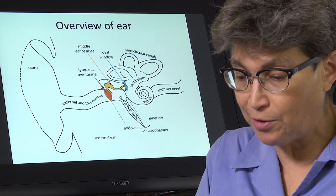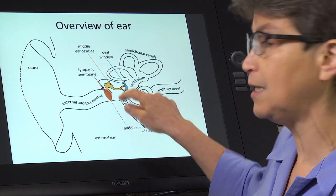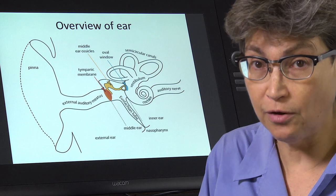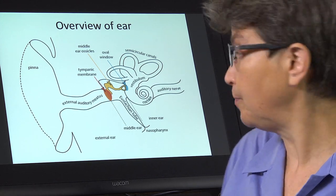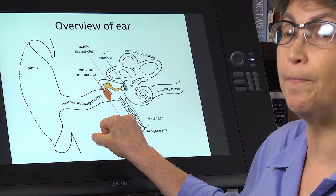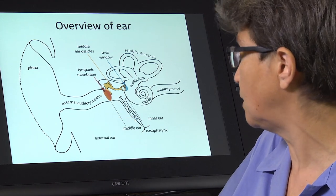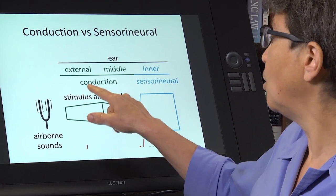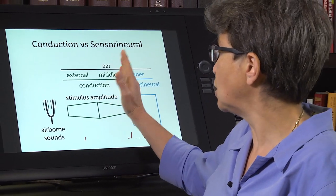So it's a conductor. We are just taking the sound from out here and we're delivering it to here with as little loss of amplitude as possible. And so the external ear and the middle ear are part of, I think I actually have this here,